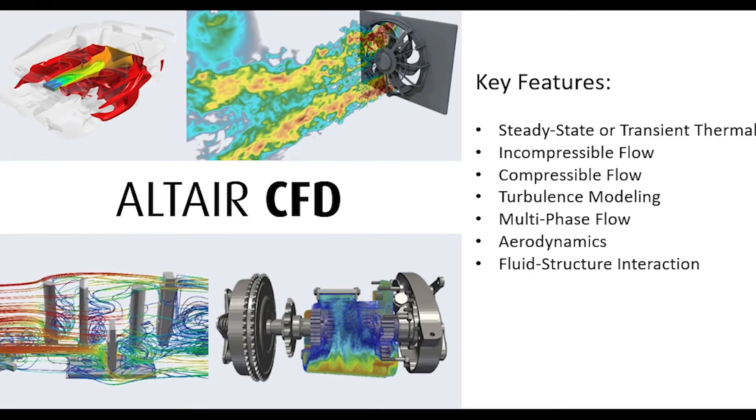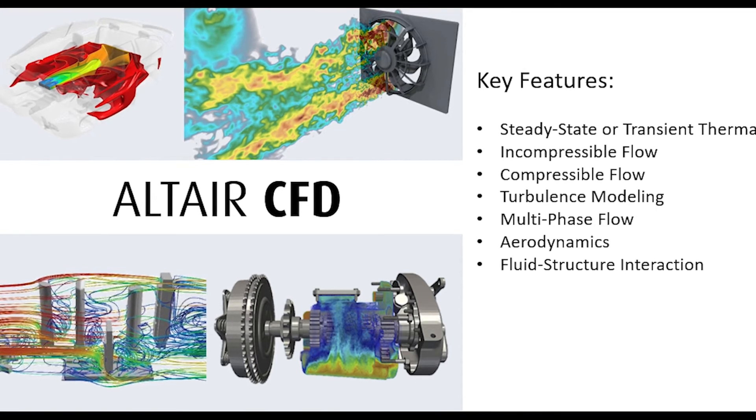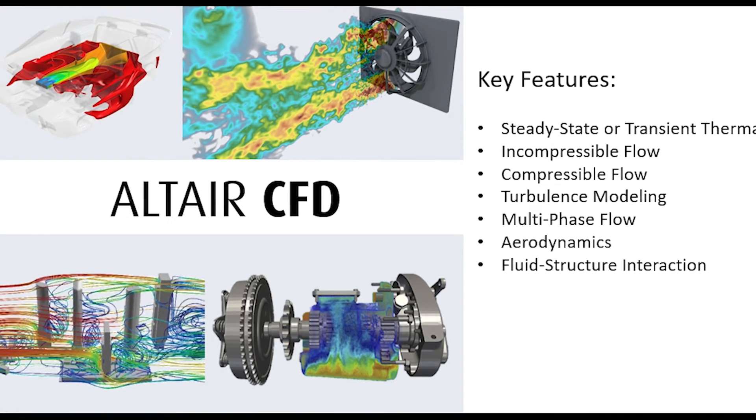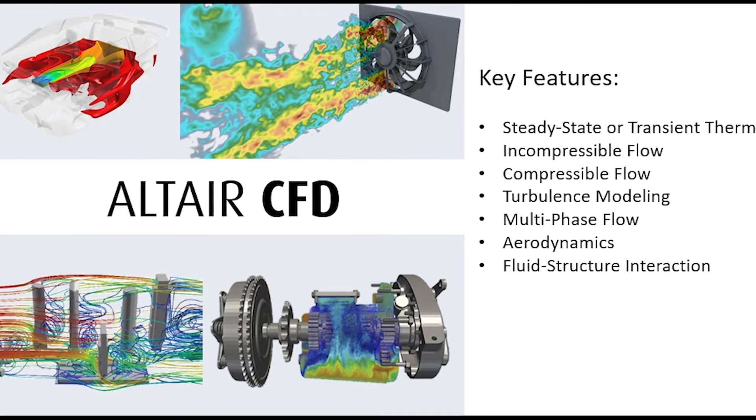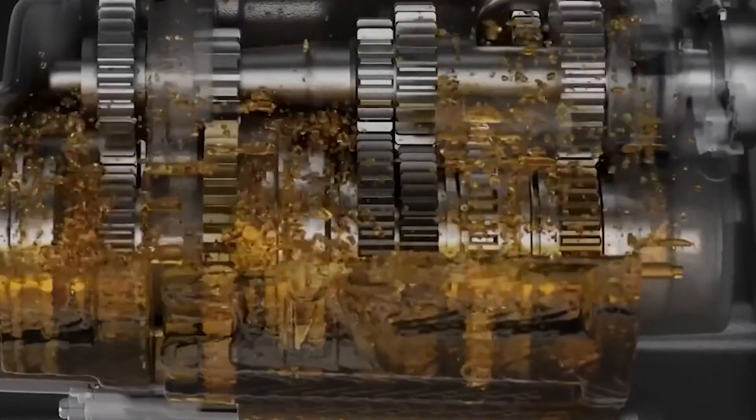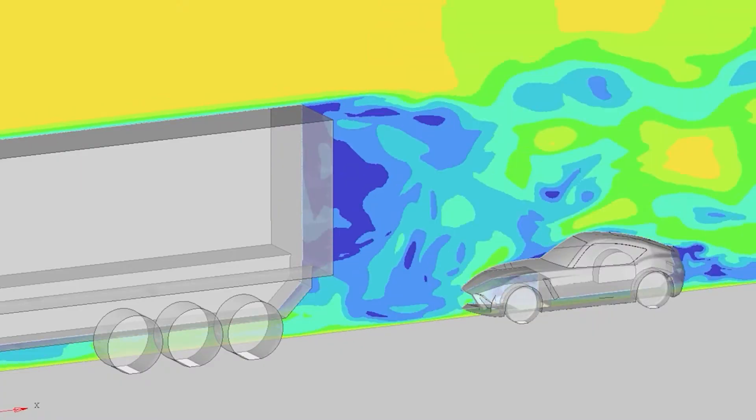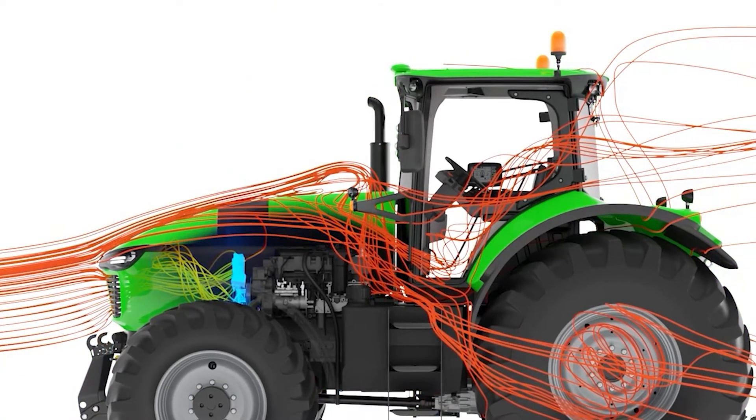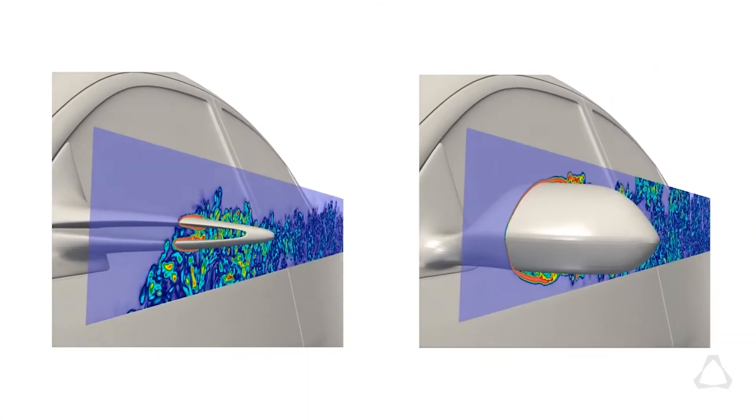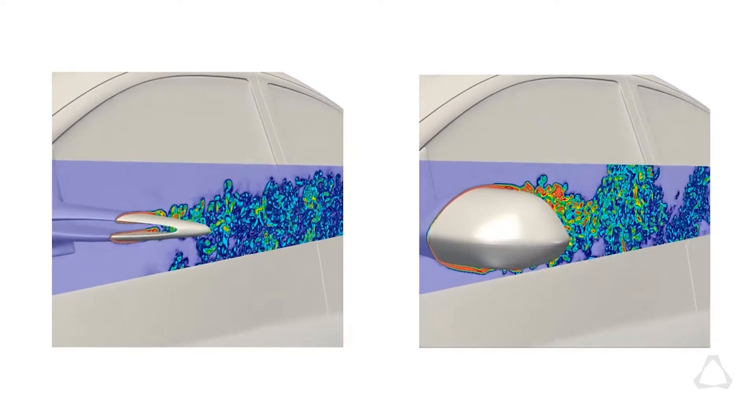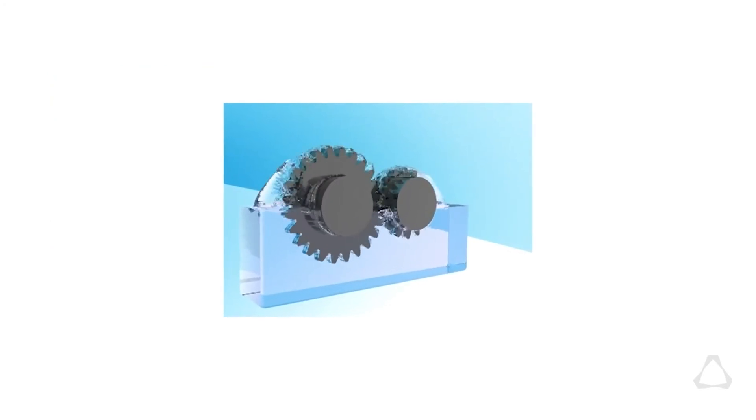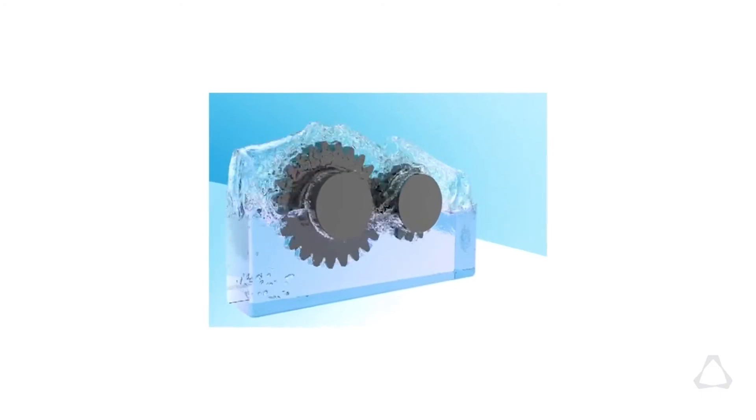The Altair HyperWorks CFD solution is a powerful set of solvers that covers most applications in the industry for general-purpose testing and thermal needs. It includes the Navier-Stokes solver for free surface, sloshing, and mixing tests. It includes the SPH or Smooth Particle Hydrodynamic solver. And for advanced aerodynamics and aeroacoustics applications, users can use the Lattice Boltzmann solver. The CFD tools can also be coupled with Altair EDEM for a particle-fluid coupled simulation like fluidized beds.